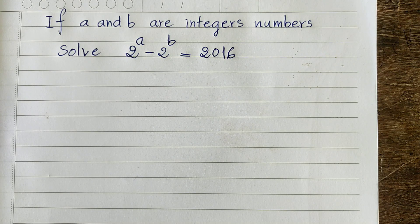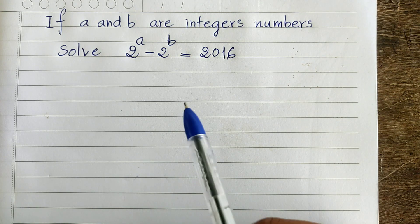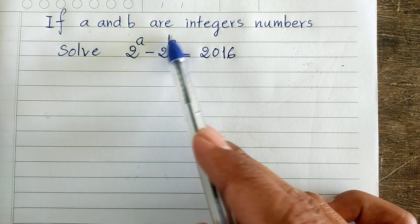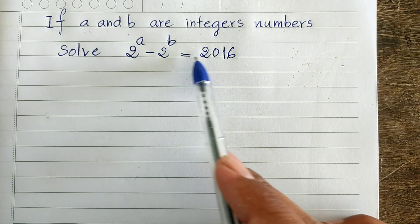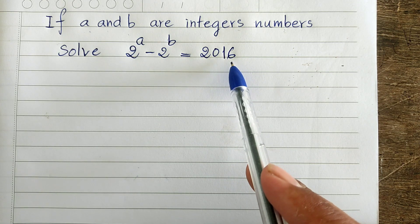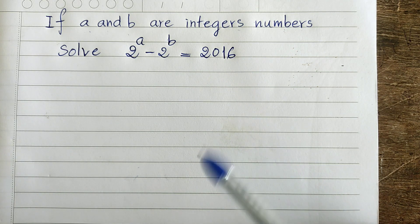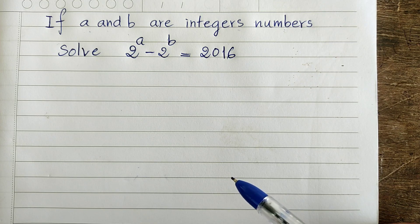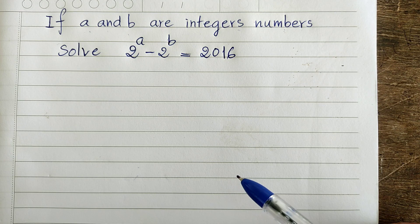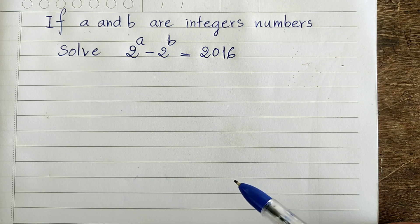Hello everyone, welcome to my YouTube channel. Today I have one exercise on paper: if a and b are integral numbers, and 2 power a minus 2 power b equals 2016, how to show this? If you know it, try it first. If not, please watch my video from beginning to end to verify your solution. Please don't forget to subscribe to my channel for more exciting videos. Now let's go to the solution together.